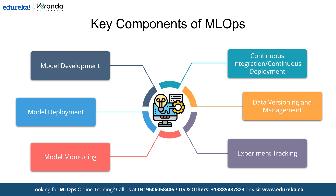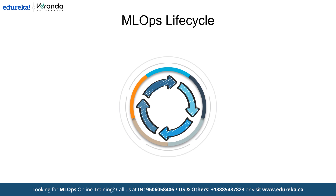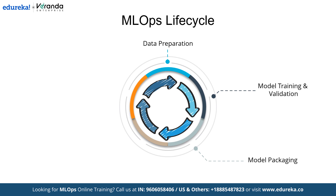Since MLOps involves various aspects, let's learn about the MLOps lifecycle. The MLOps lifecycle consists of several critical steps that ensure the effective management of machine learning models in production. Data preparation involves collecting, cleaning, and versioning data to ensure consistency and reproducibility. Model training and validation includes conducting experiments, fine-tuning hyperparameters, and selecting the best performing model. Once the model is finalized, model packaging takes place, where the model is wrapped into a deployable format using tools and frameworks suited for the target environment. Then deployment follows, where the packaged model is integrated into production systems, whether on-premises, cloud, or edge platform. Finally, monitoring and feedback ensures continuous observation of the model's performance in production by tracking metrics like accuracy and latency, while feedback loops allow for iterative improvements to maintain performance and relevance.